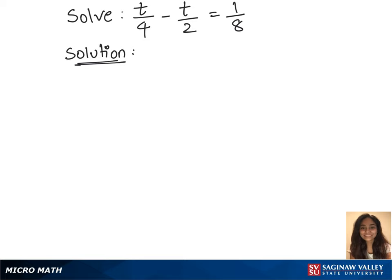To solve the equation t/4 - t/2 = 1/8, we first clear the equation of fractions by multiplying both sides of the equation by the least common denominator of all denominators. We have 4 and 8, and the LCD of 4 and 8 is 8.